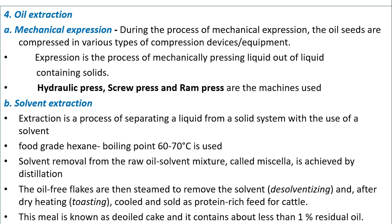Solvent extraction is a process of separating a liquid from a solid system using a solvent. Food-grade hexane with a boiling point of 60 to 70 degrees Celsius is used. Solvent removal from the raw oil-solvent mixture called miscella is achieved by distillation. The oil-free flakes are steamed to remove the solvent, then dry heated, cooled and sold as protein-rich feed for cattle. This meal is known as de-oiled cake, containing less than 1% residual oil.